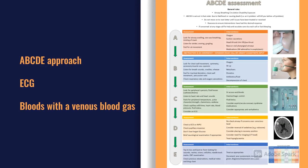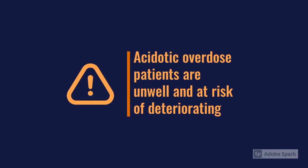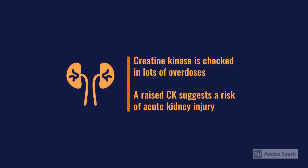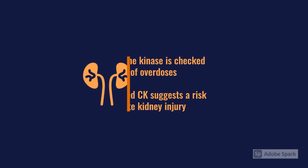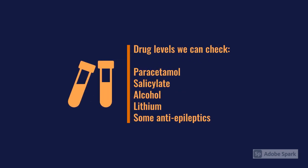The initial management advice is similar for all overdoses: an A-to-E approach, get an ECG, and send off bloods. The most important is a gas - if they're acidotic it's a sign they're unwell and at risk of further complications like shock or seizures, which changes where you manage them, possibly in a resus environment. CK (creatinine kinase) is commonly checked as a marker of muscle damage, shock risk, and AKI. Drug levels we check are paracetamol, salicylate, alcohol, and some monitored drugs like lithium and carbamazepine.